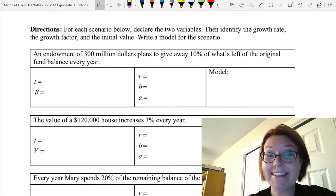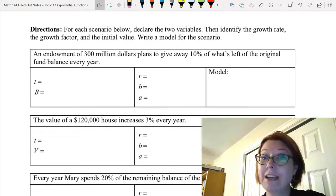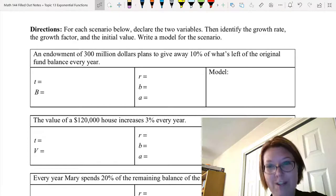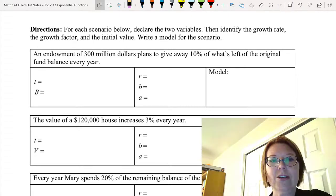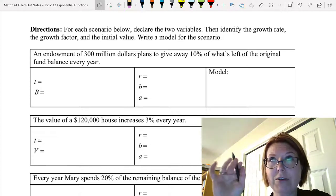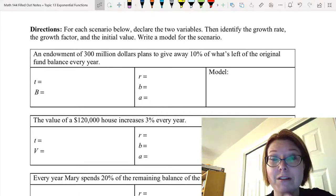Okay, we're back. Let's try the first one. An endowment of $300 million plans to give away 10% of what's left of the original fund balance every year. So we are starting with $300 million. In order to not write out 300, 0, 0, 0, 0, 0, 0, I'm going to cleverly define the variable as being in millions of dollars.